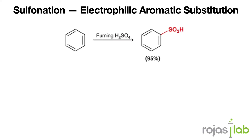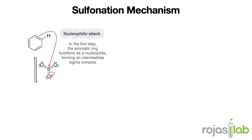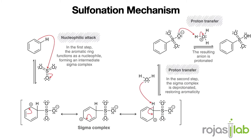In sulfonation, a sulfonic group, or SO3H, is introduced onto an aromatic ring via electrophilic aromatic substitution. Sulfonation begins with the generation of an electrophile — a species hungry for electrons. In this case, our electrophile is a sulfur trioxide molecule, which is present in fuming sulfuric acid. As the sulfur trioxide molecule approaches the benzene ring, it forms a sigma complex where the pi electrons of the benzene ring attack the electrophile, resulting in the formation of a positively charged intermediate. Next, a proton transfer occurs, regenerating the aromaticity of the benzene ring and yielding the final sulfonated product.